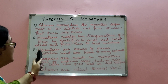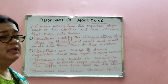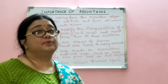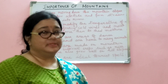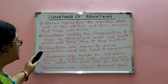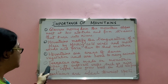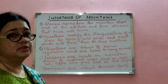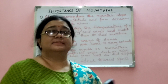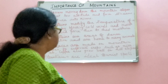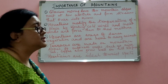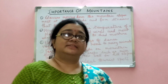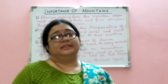Mountains are areas of dense vegetation and home to many animals, as a wide variety of flora and fauna are found in mountainous areas. Terraces are made on mountain slopes to cultivate crops; rice, tea, and coffee also grow well on hill slopes. Finally, mountains are ideal tourist spots because mountainous areas are very picturesque.